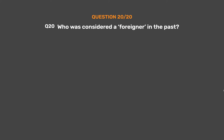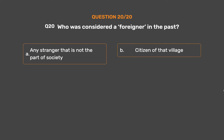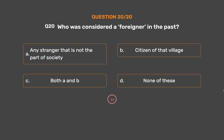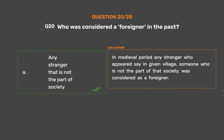Question 20: Who was considered a foreigner in the past? Option A: Any stranger who is not part of the society. Option B: A citizen of that village. Option C: Both A and B. Option D: None of these. The correct answer is Option A: Any stranger who is not part of the society. In the medieval period, any stranger who appeared in a given village — someone who was not part of that society — was considered a foreigner.